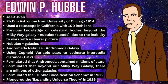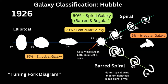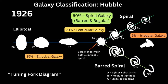Hubble's classification scheme in 1926 was a tuning fork diagram with three branches. One branch was elliptical galaxies, which appeared oval in shape, with varying degrees of eccentricity in different categories — about 15% of the galaxies seen through his telescope. Then there were spiral and barred spiral galaxies, the most common at about 60% combined.